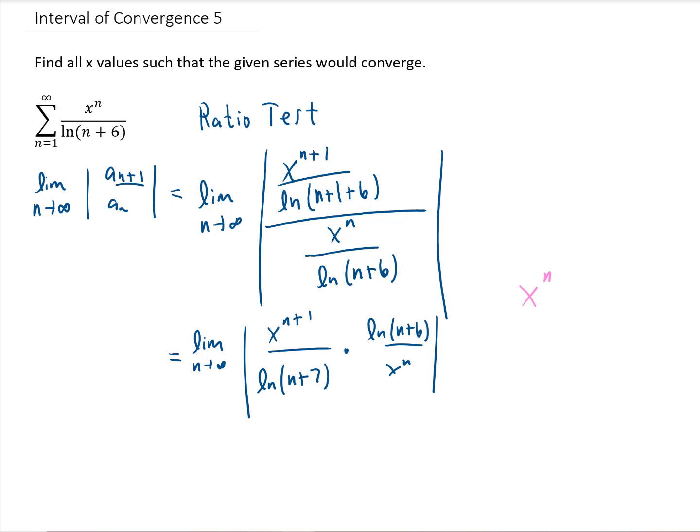I'd recall that we can write x to the n plus one as x to the n times x. If we do that simplification here, you'll notice that this x to the n cancels with this x to the n in the denominator. And what we're left with is an x on top, and I'll put the two remaining natural log terms out to the side.